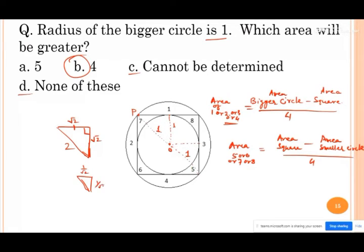Yes or no? Yes sir, root 2, 1 upon root 2. So this radius will be 1 upon root 2.